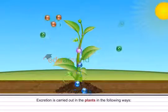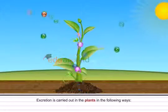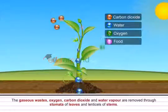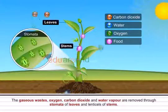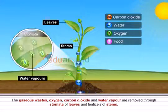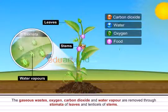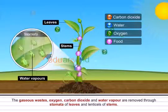Excretion is carried out in plants in the following ways. Number one, the gaseous wastes, oxygen, carbon dioxide and water vapors are removed through stomata of leaves and lenticels of stems.